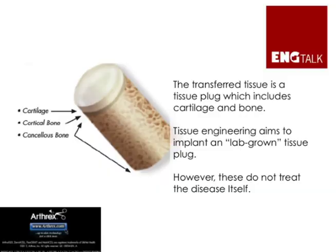The idea is that the transferred tissue will graft into place and lead to restored cartilage in that region. Here you see an actual schematic of a transferred tissue plug containing both bone and cartilage that is used in the OATS procedure. Similarly, tissue engineering aims to implant a lab-grown tissue plug into the defect site. However, neither the OATS procedure nor the standard tissue engineering approach treat the chronic inflammation associated with osteoarthritis.